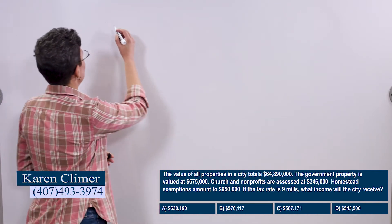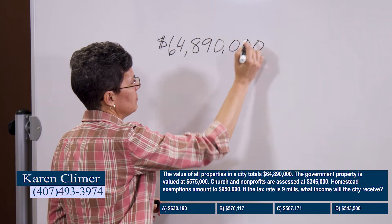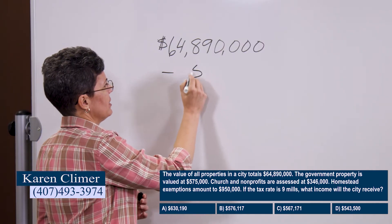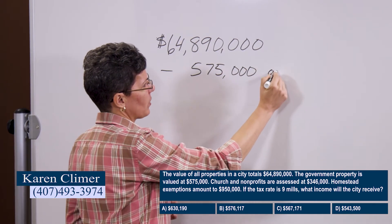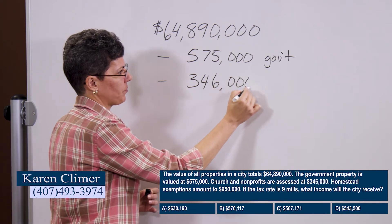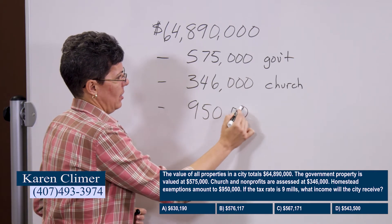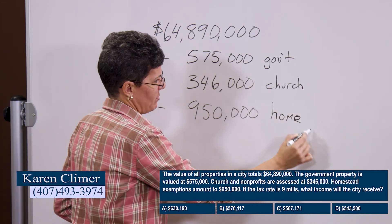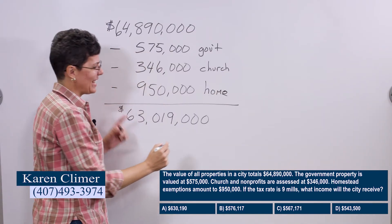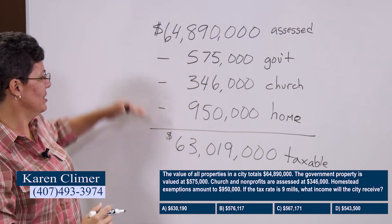So here's what's going on. All of the property in the whole city totals sixty-four million, eight hundred and ninety thousand dollars — every single piece of property. But not everybody pays property tax. Government property doesn't have to pay, so we subtract that out. Churches and nonprofits don't have to pay, so we subtract them out. The homestead exemption gets subtracted out as well. That leaves us with sixty-three million, nineteen thousand — this is the taxable value of everything.